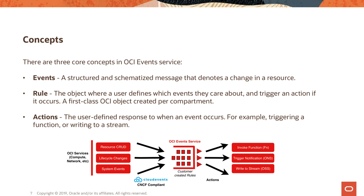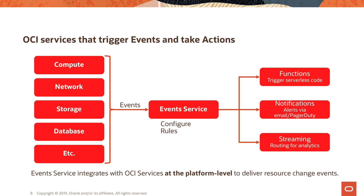Based on the rule matching you specify, customer-defined actions are invoked. Rules can have one or more actions defined to execute when triggered. Actions are responses you define for event matches — there is a defined set of actions to choose from, and the content of the matching event is also passed to the action. Actions can be taken on the OCI Functions Service, the Notification Service, and the Streaming Service, enabling a wide variety of use cases in OCI and beyond.